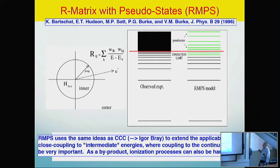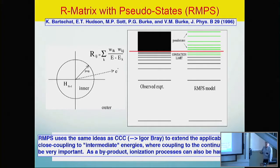The R-matrix with pseudo-states — I had something to do with that. That was probably the first calculation that was really pushed to convergence. The idea is: you have an energy spectrum with an infinite number of bound states and a continuous continuum, and we represent the high-lying Rydberg states and this continuum with pseudo-states, and kind of hope for the best that it converges to the correct answer. As a by-product, the method allows calculation of ionization processes.